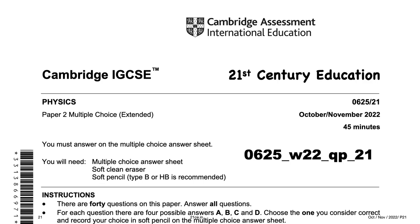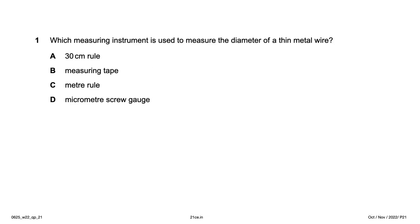Good evening friends, let's solve the October/November 2022 MCQ paper, component code 21. Which measuring instrument is used to measure the diameter of a thin metal wire? The obvious answer is micrometer screw gauge, so option D.